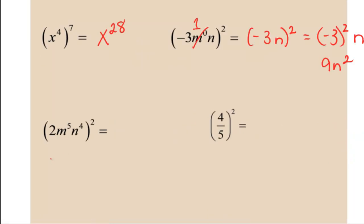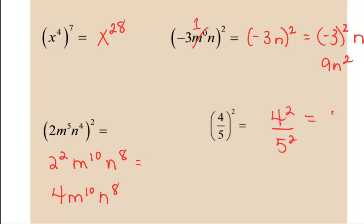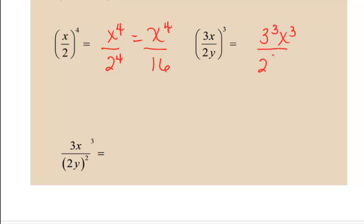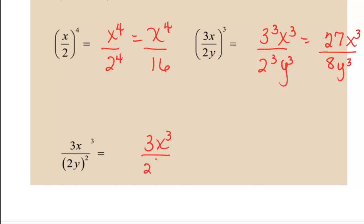Next, we have 2 squared m to the tenth n to the eighth, which equals 4m to the tenth n to the eighth. Our next example, we end up with 4 squared over 5 squared, which is 16 over 25. In our next example, we end up with x to the fourth over 2 to the fourth, which is the same as x to the fourth over 16. In the next example, we end up with 3 cubed x cubed over 2 cubed y cubed, so we get 27x to the third over 8y to the third. And then in our last example, this is 3x to the third over 2 squared y squared, so we end up with 3x to the third over 4y squared.